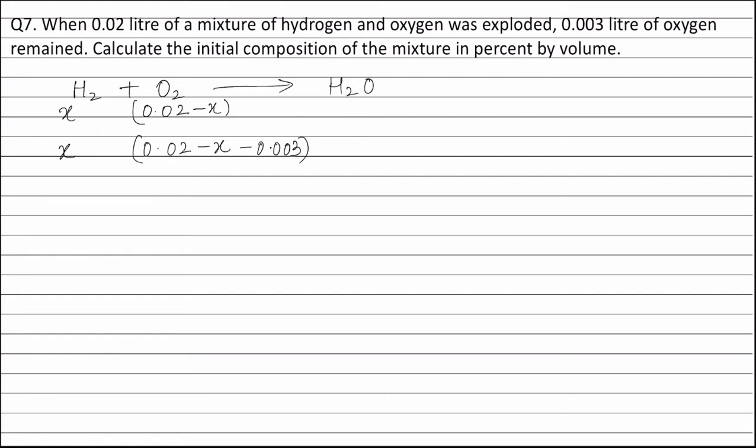So, volume of hydrogen that has taken part in the reaction is x litre and volume of oxygen that has taken part in the reaction is 0.02 minus x minus 0.003 litres.